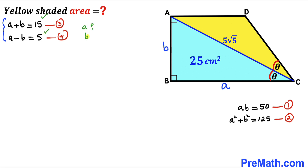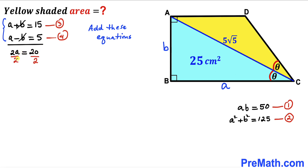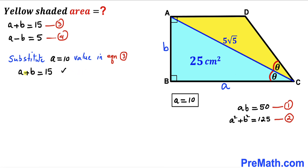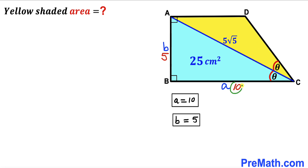We now have a system: a + b = 15 and a − b = 5. Adding the two equations eliminates b, giving 2a = 20, so a = 10. Substituting a = 10 into Equation 3: 10 + b = 15, so b = 5. Therefore a = 10 cm and b = 5 cm.